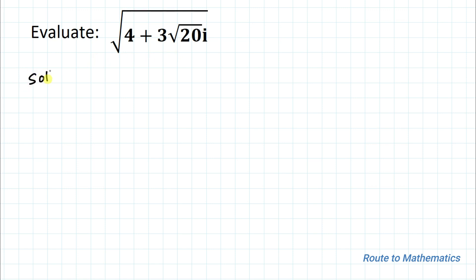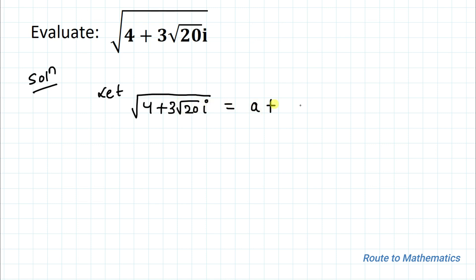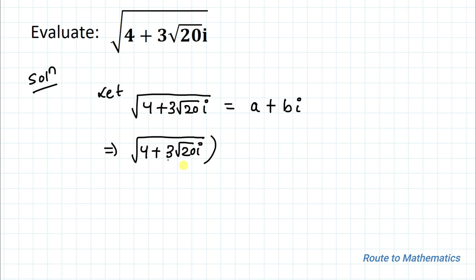Without any delay, let's start the solution. Our first step is to let √(4 + 3√20·i) = A + Bi. In the next step we are going to square both sides of the equation, giving us (4 + 3√20·i) = (A + Bi)².